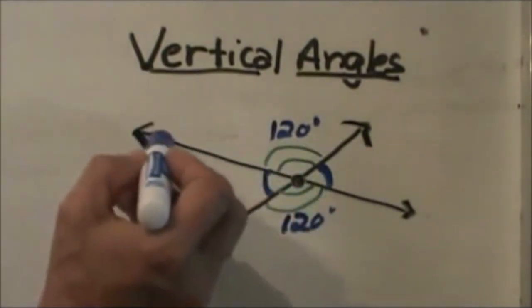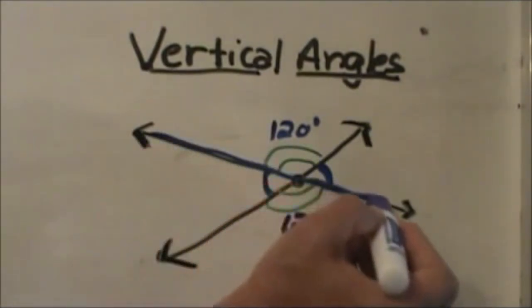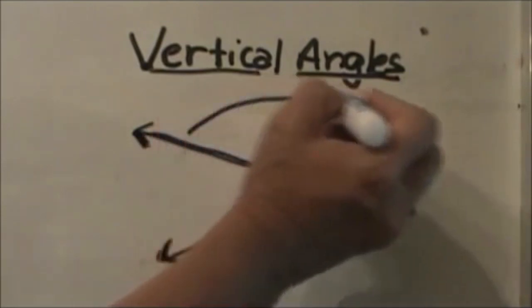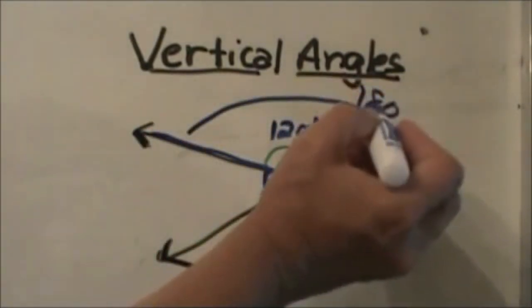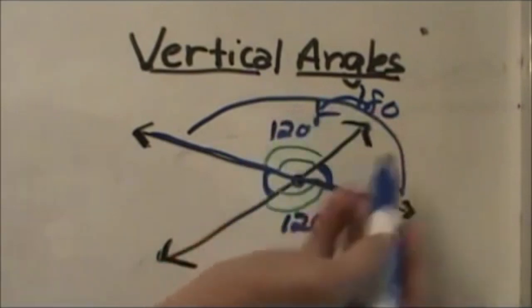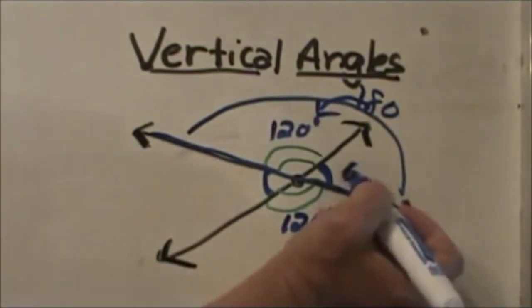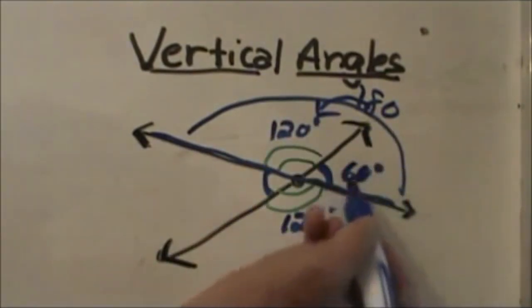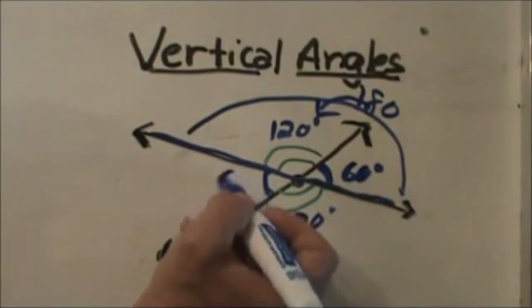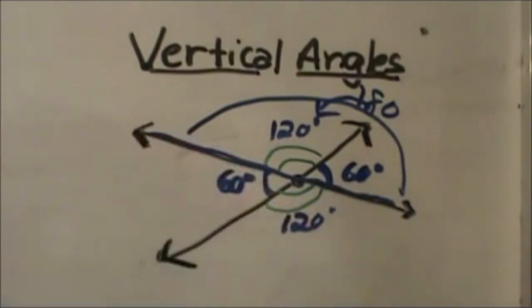Now if you'll notice, this is a straight line and we know that lines add up to 180. So if 120 is here, that means we have 60 degrees left for this side, which means this vertical angle is also 60 degrees. That's how vertical angles work.